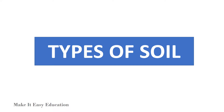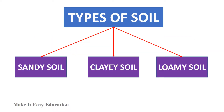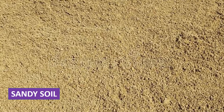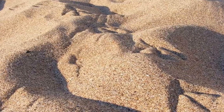Types of soil. There are mainly three types of soil. They are sandy soil, clay soil and loamy soil. Sandy soil has a greater portion of sand particles. Sandy soil feels rough and gritty. It is non-sticky when wet and does not hold much water.